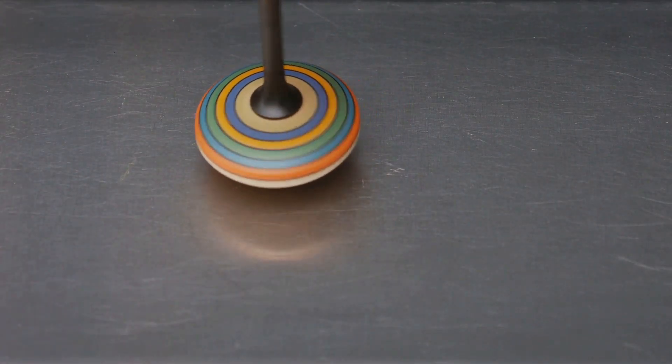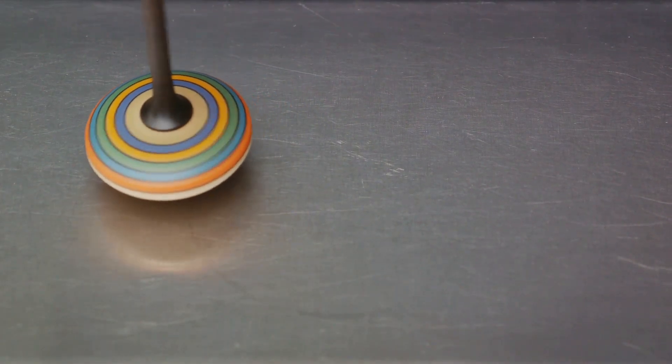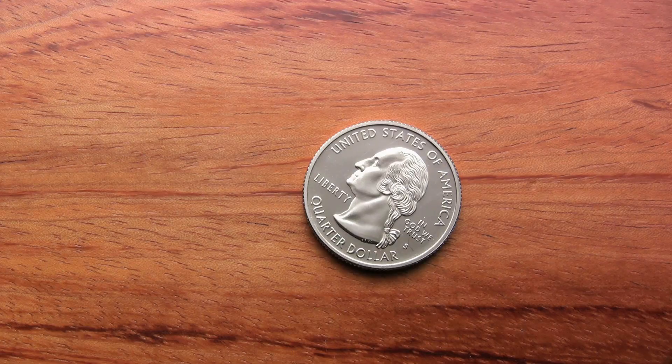Imagine a coin spinning in the air. While it's spinning, it's neither heads nor tails, but a blend of both. It's only when the coin lands and we look at it that it becomes one or the other. This, in essence, is quantum superposition.